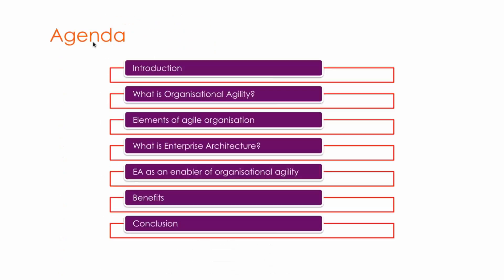Today's webinar agenda: we will be looking at an introduction — what exactly is agility, organizational agility, and how can enterprise architecture help achieve it. We'll also look at the elements of an agile organization, the definition of enterprise architecture, and how EA can be an enabler of organizational agility. We'll cover the benefits for organizations that have implemented enterprise architecture, and then conclude.